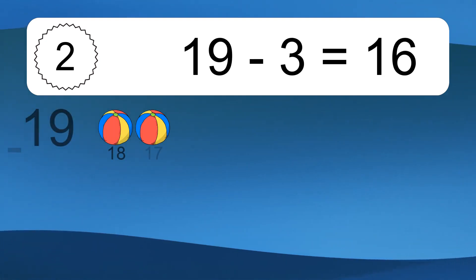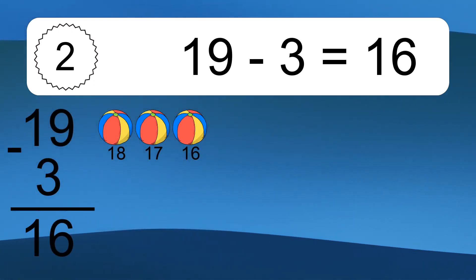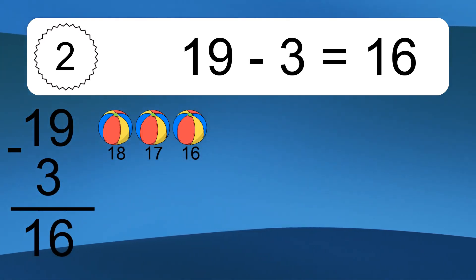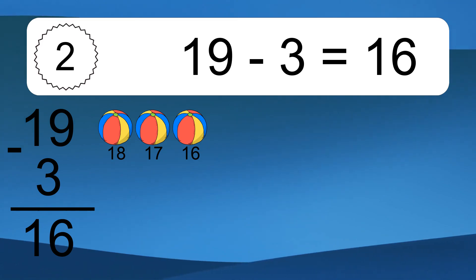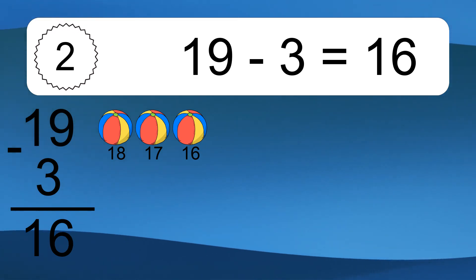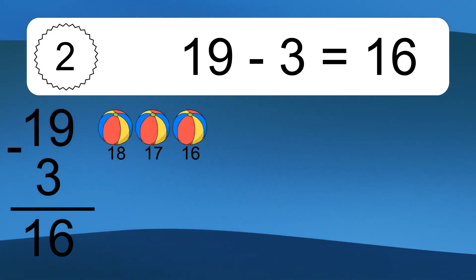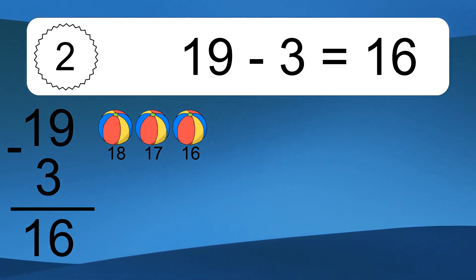19 minus 3 equals what? 19 minus 3 equals 16. Let's count it. 18, 17, 16.